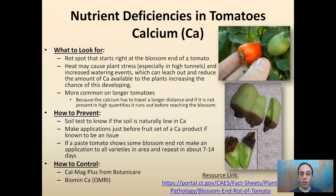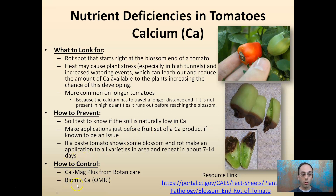Blossom end rot can occur particularly in high tunnels with a lot of irrigation events, because we're simply flushing out and leaching some of the calcium that would be in the soil. How to prevent it? Get a soil test to know if you're low, a tissue test as well, and make sure you're fertilizing with calcium — particularly if you're doing a lot of irrigation events in high tunnels. Two products are listed along with a resource link for more information.